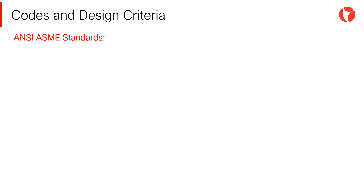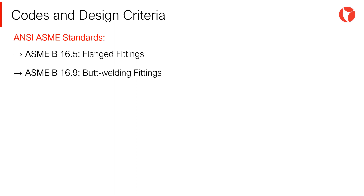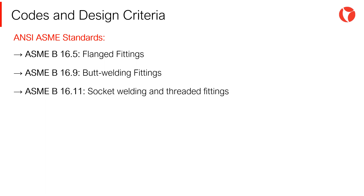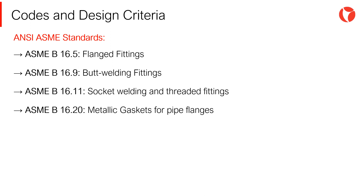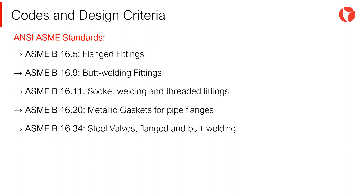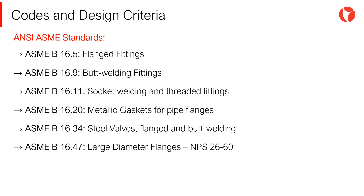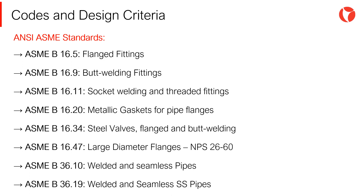The ASME standards most used in the design of piping systems are: B16-5 flanged fittings; B16-9 butt welding fittings; B16-11 socket welding and threaded fittings; B16-20 metallic gaskets for pipe flanges; B16-34 steel valves; B16-47 large diameter flanges; B36-10 welded and seamless pipes in carbon steel; and B36-19 welded and seamless pipes in stainless steel.